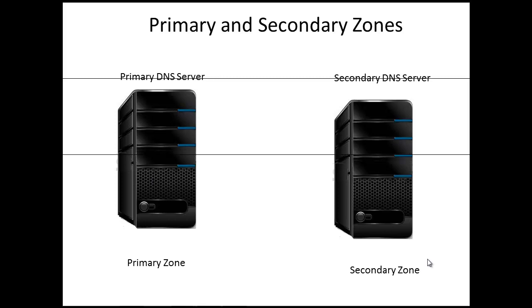The second step is, on the primary DNS server, we want to verify that the transfer settings for the zone permit that zone to be transferred to the prospective secondary DNS server, and we can configure that on the properties of the DNS zone. Thirdly, on the prospective DNS server, we need to add the zone. Now we are going to go through those steps.